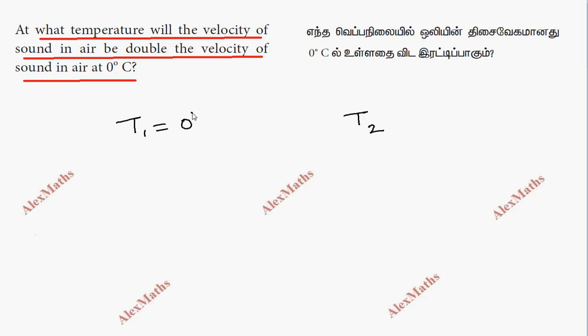T1 is 0 degrees Celsius, which in Kelvin is 273 plus 0, so T1 equals 273 Kelvin. T2 is T degrees Celsius, which in Kelvin is T plus 273 Kelvin.